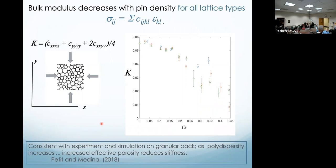Are we making a system which is more or less rigid by adding pins? Very quickly — well, it's more rigid, you're adding these points of support. But you're adding them before you equilibrate the system, and you're creating a different kind of jammed structure. It turns out that if you look at the bulk modulus, it is decreasing with the fraction of pins. It's tough to model it theoretically, but it's certainly consistent with experiment and simulation on granular packs — as polydispersity increases, you're increasing the porosity, and when you increase the porosity of the material, you're making it more pliable, less elastic.